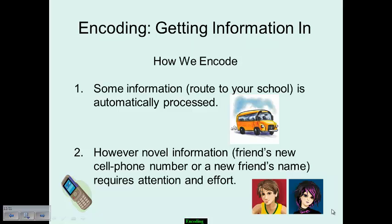Some information is going to be automatically processed for us. For example, your route to school — eventually that will become a scenario where it's just automatically established. But novel information, things that are not necessarily easy to keep in mind, like a friend's new cell phone number or a new acquaintance's name, that's going to require attention and effort on our part. When we talk about information being automatically processed, that means there is automatic processing occurring in the encoding process.